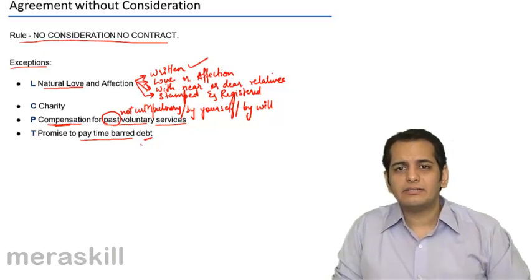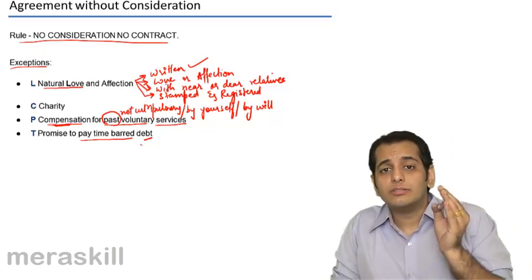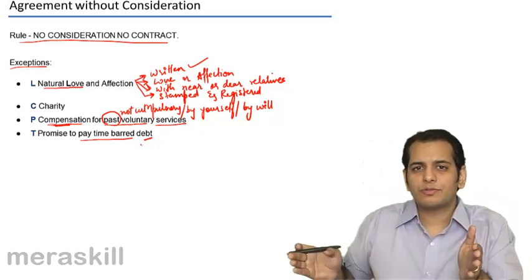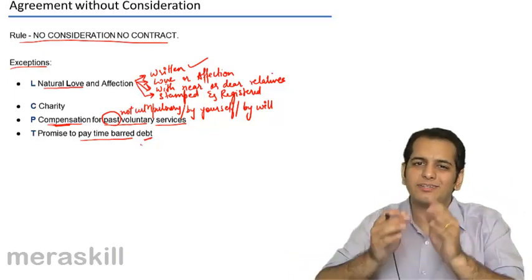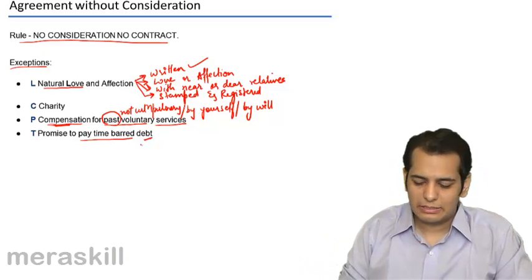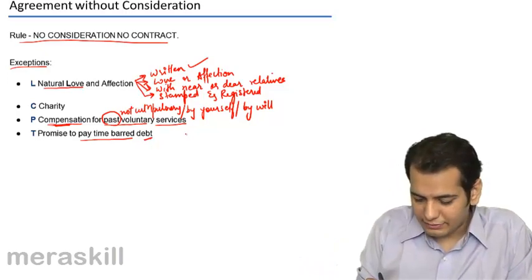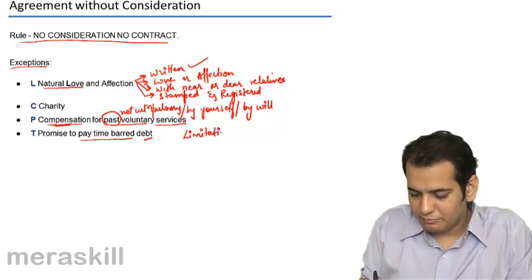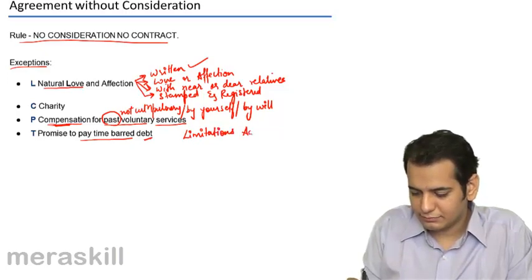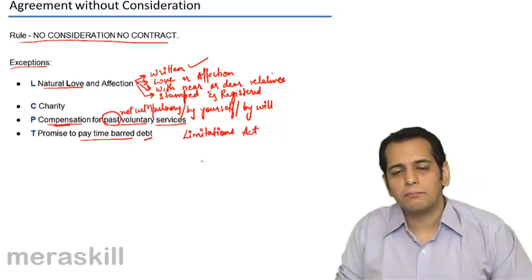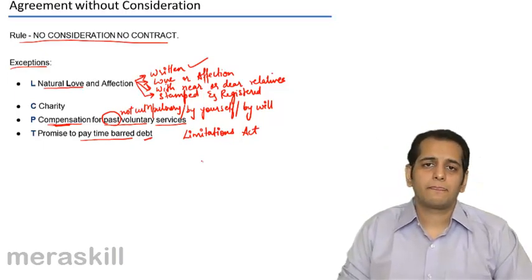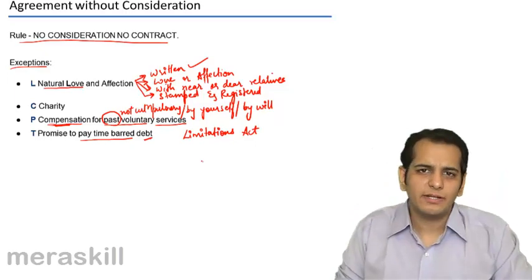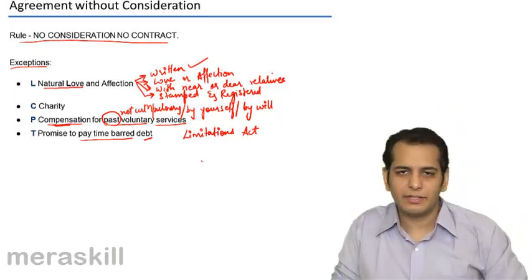A time barred debt is a debt which is barred on account of elapse of time as per the Limitations Act. There is an Act, Limitations Act. It is a law passed by the Parliament. And in this law, a time limitation has been set for various actions to be taken.